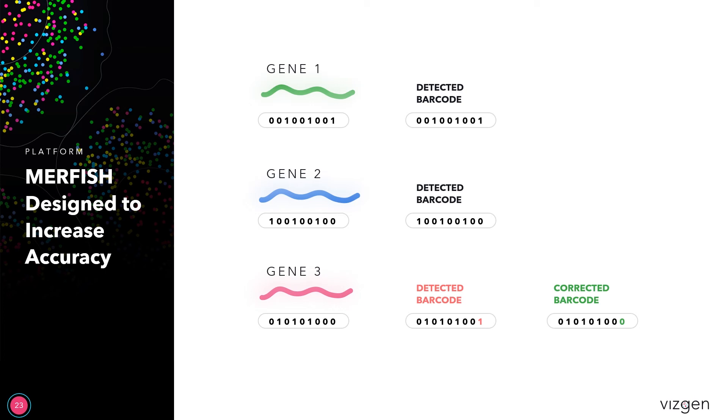The barcode sequences are designed to have enough space between them, so incorrectly assigning a barcode is going to be very unlikely. If there is a readout error, the system can assign the readout to the nearest correct barcode. This is what makes the results of MERScope so accurate and consistent.